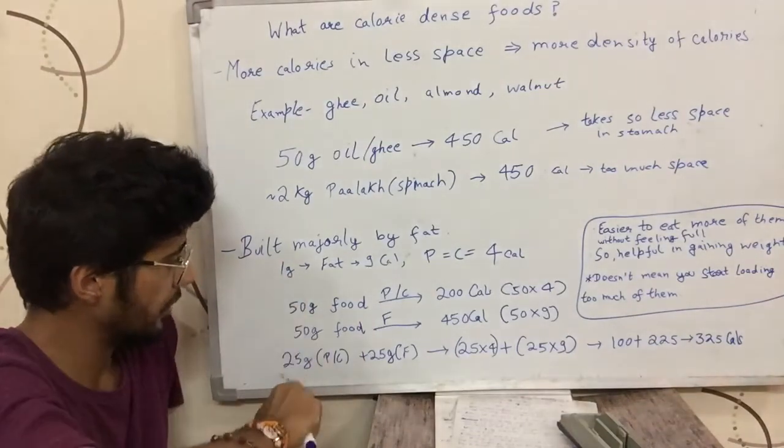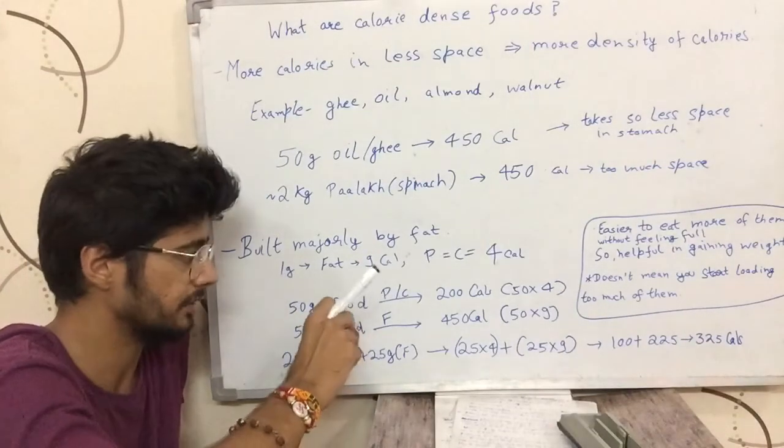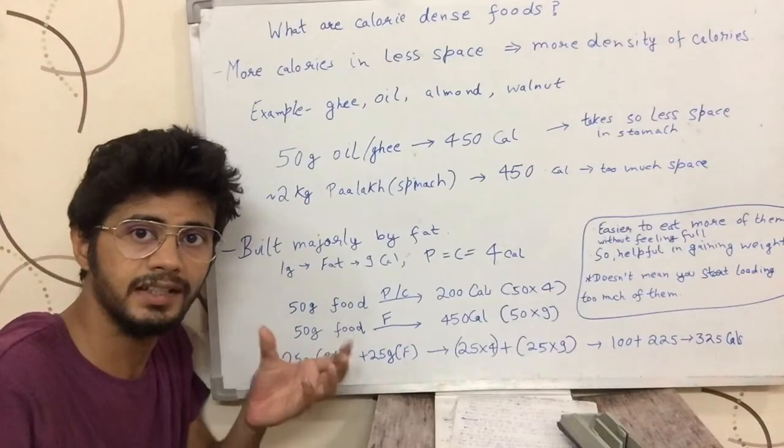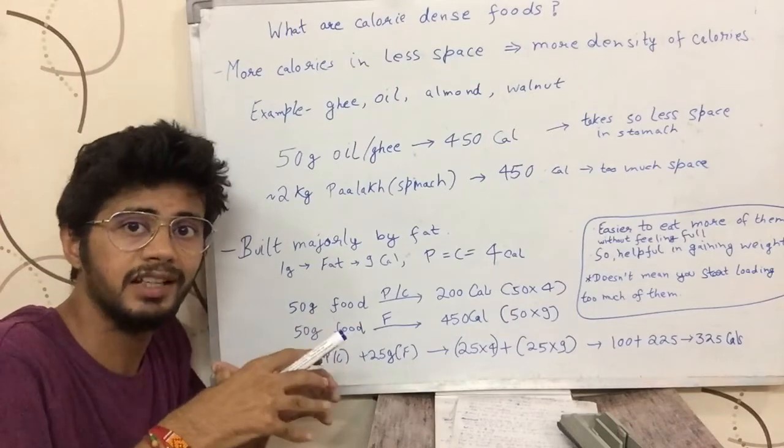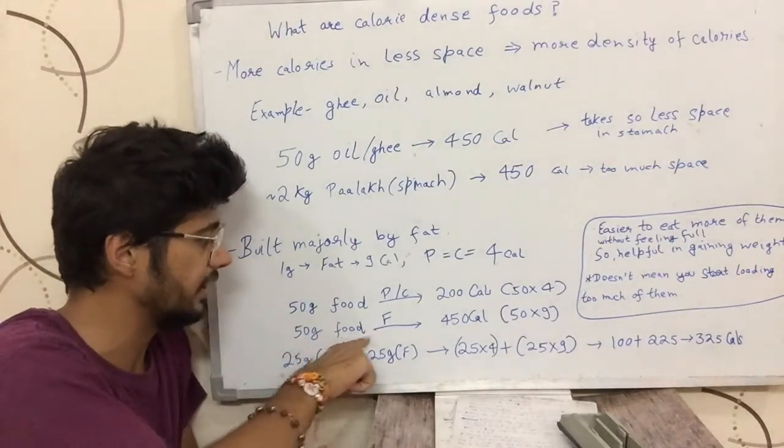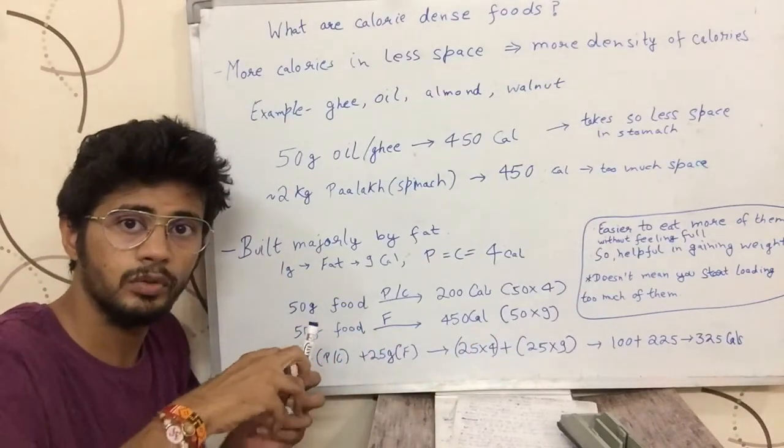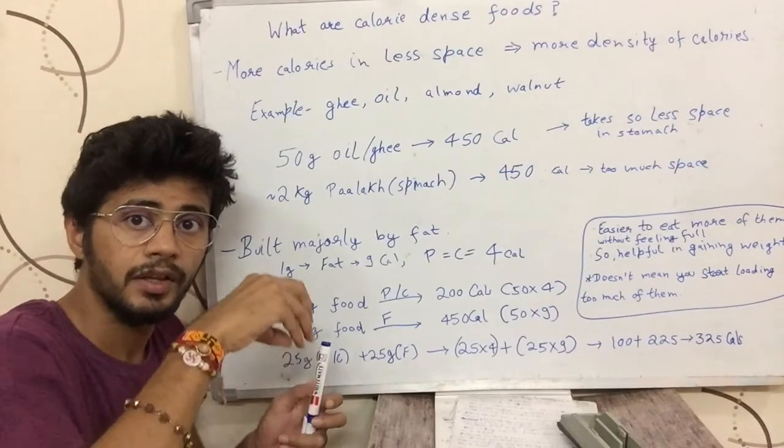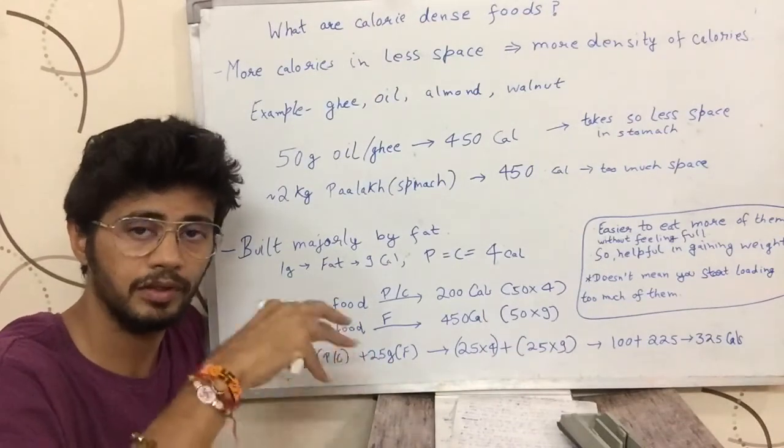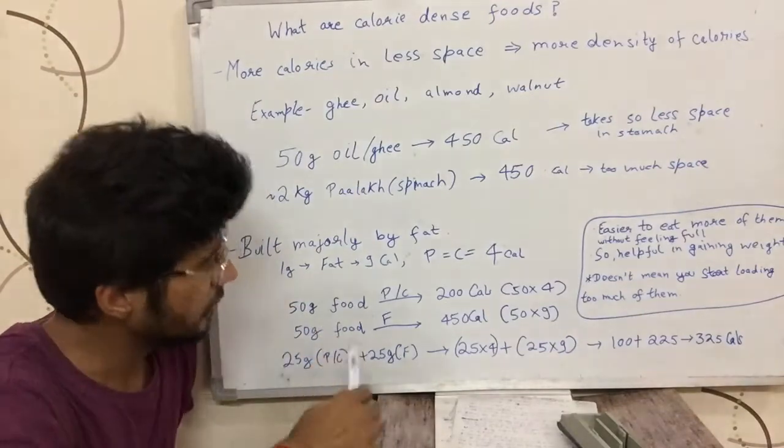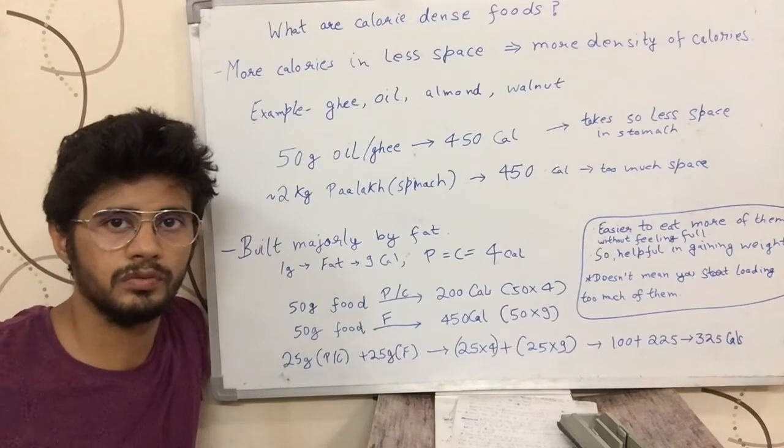If you observe it, as the amount of fat increases in those 50 grams, the calories in the same 50 grams increases. When you have all the 50 grams from fat, you have the highest number of calories. For a particular food item, as you increase the number of grams of fat in that food, the calories would increase in that food for the same amount of food item, taking the same amount of space. That explains that majorly calorie-dense foods would be built by fat.